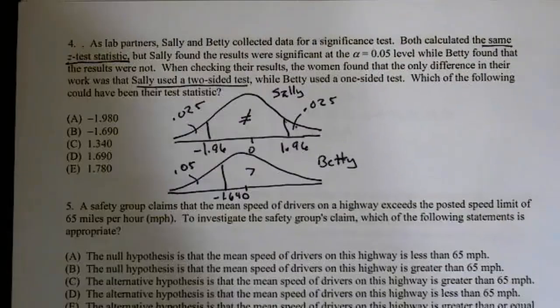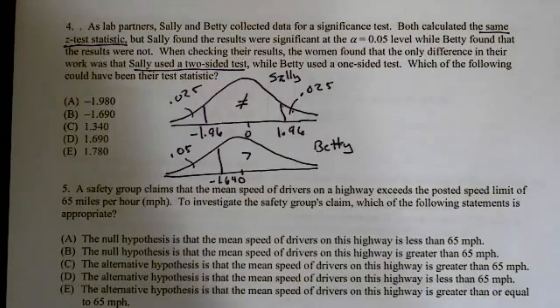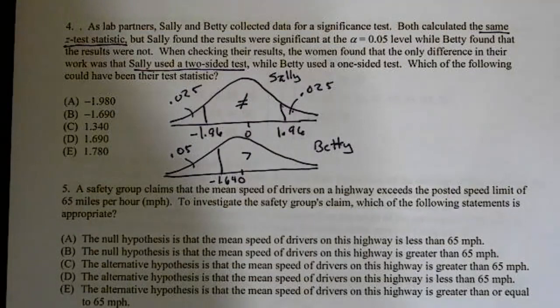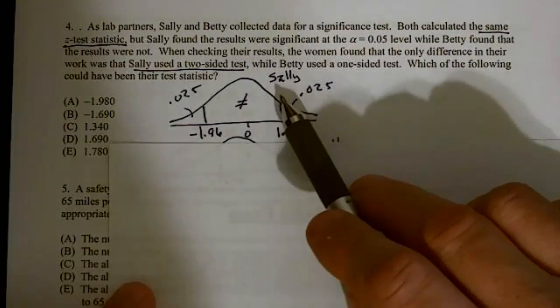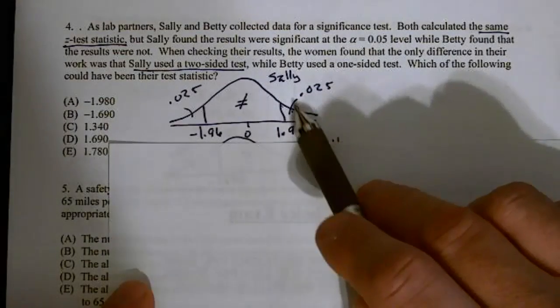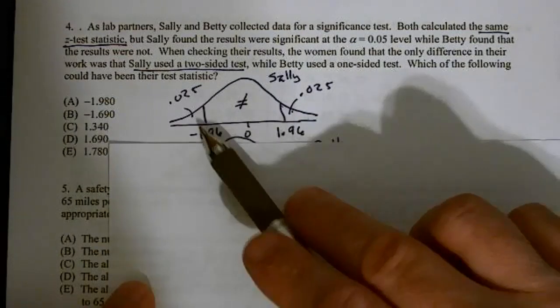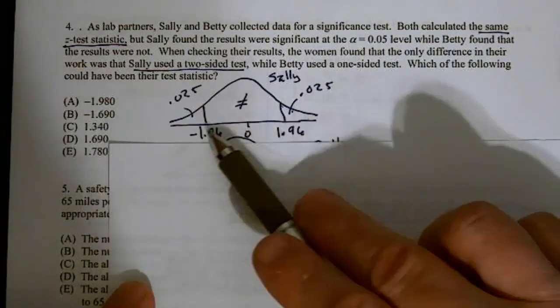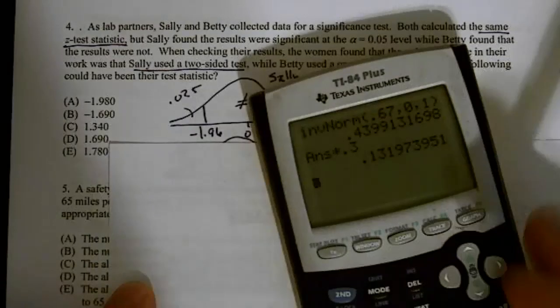Good old Betty and Sally. As lab partners, Sally and Betty collected data for a significance test. Both calculated the same z-statistic, but Sally found the results were significant at alpha equals 0.05, while Betty found that the results were not. When checking the results, the women found that the only difference in their work was that Sally used a two-tail test. Well, Sally used a two-tail test and we have alpha equals 0.05. That means in each tail, alpha is the area in each tail. So 0.05 divided by 2 is 0.025.